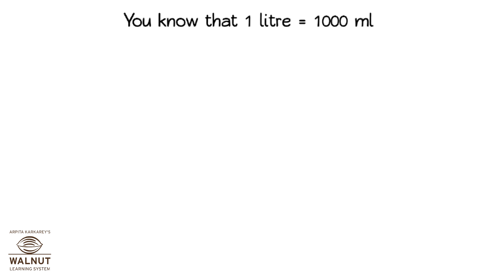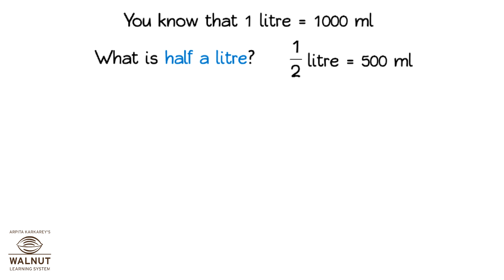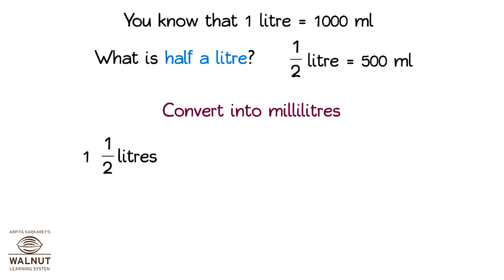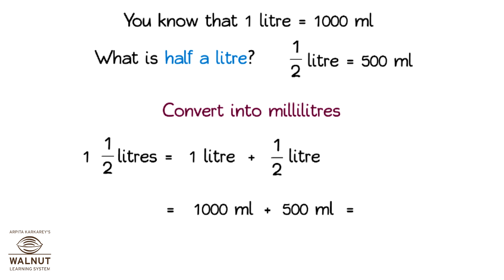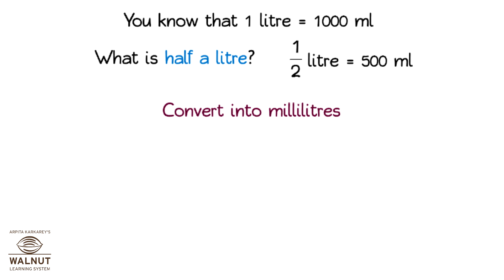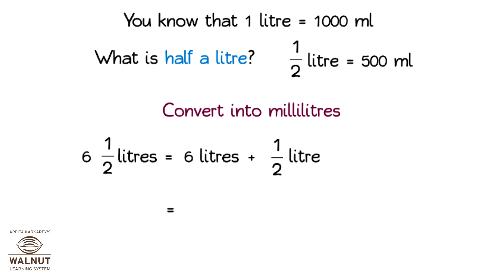You know that 1 litre is equal to 1000 millilitres. What is half of a litre? Half litre is equal to 500 millilitres. Convert into millilitres: one and a half litres is equal to 1 litre plus half litre = 1000 mL plus 500 mL = 1500 millilitres. Six and a half litres is equal to 6000 mL plus 500 mL = 6500 millilitres.